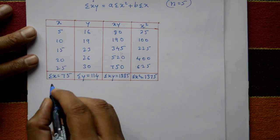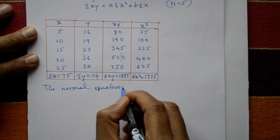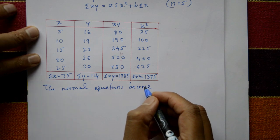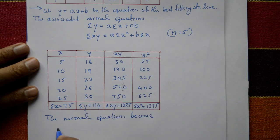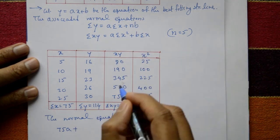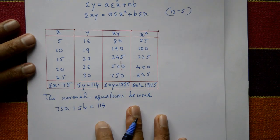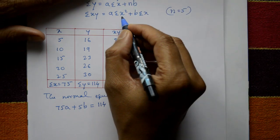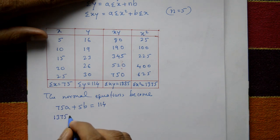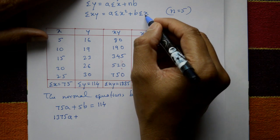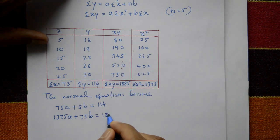The normal equations become: 75a + 5b = 114, and 1375a + 75b = 1885.